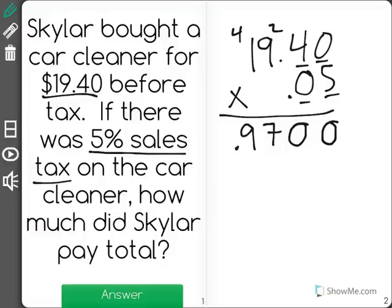Notice that I had 1, 2, 3, 4 numbers after decimal points, which means my answer also needs 1, 2, 3, 4.